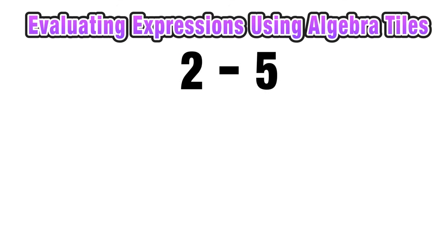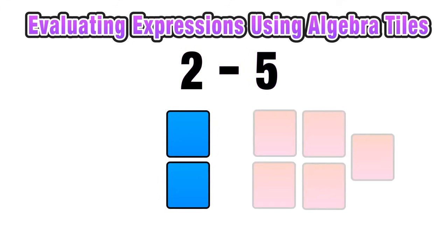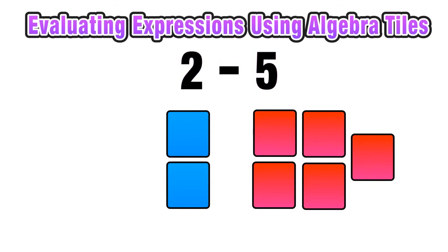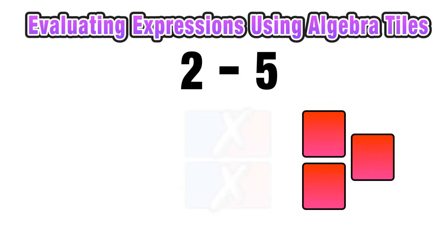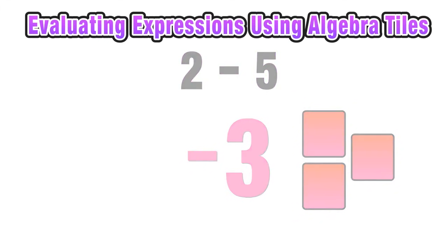What about 2 minus 5? I can represent positive 2 with 2 blue squares and negative 5 with 5 red squares. Again, I can pair up any combos of a blue and a red square, which will cancel out. And what I'm left with is 3 red squares. So I can say that 2 minus 5 is equal to negative 3.